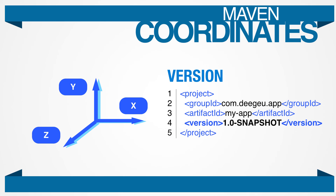Once you have a group ID and artifact ID, you still can't determine the correct file — there might be multiple versions of this file. The version ID specifies the particular version of your project. You should use numbers like 1.0.1 for the version — that would be the major, minor, and build numbers. With the group ID, artifact ID, and version, you can uniquely identify a particular project.